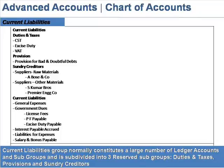Current Liabilities. The Current Liabilities group normally constitutes a large number of ledger accounts and subgroups, and is subdivided into three reserved subgroups: Duties and Taxes, Provisions, and Sundry Creditors.